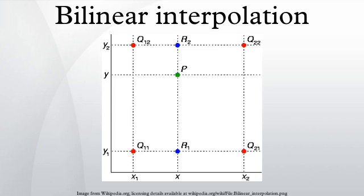The key idea is to perform linear interpolation first in one direction, and then again in the other direction. Although each step is linear in the sampled values and in the position, the interpolation as a whole is not linear but rather quadratic in the sample location.